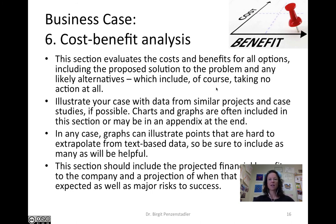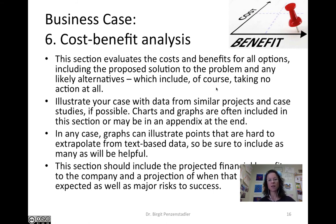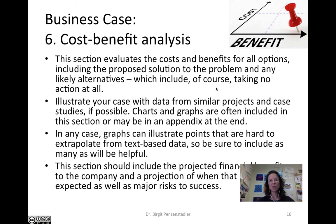Number six is cost-benefit analysis. In that section, we figure out for all options — including the proposed solution and the most likely alternatives — what the costs and benefits are. The likely alternatives always include doing nothing. Try to illustrate your case with data from similar projects and case studies if possible. Charts and graphs in this section make it easier to understand trade-offs, though you could also put them in an appendix. Graphs can illustrate points that are hard to understand from narrated text alone. We also want projected financial benefits to the company, a projection of when the payoff is expected, and an overview of the major risks to success.